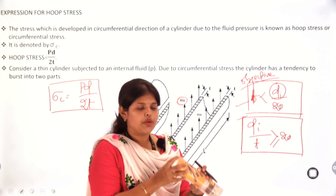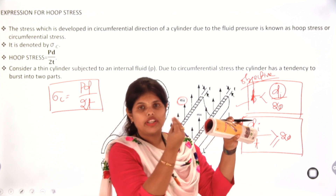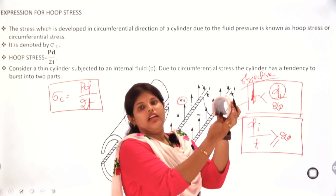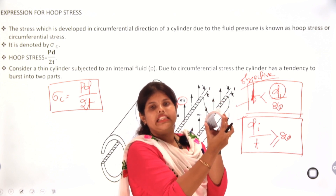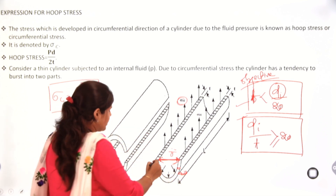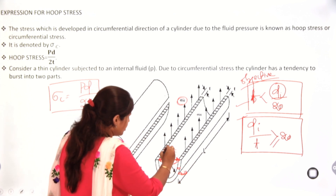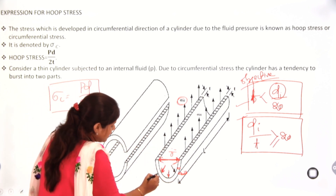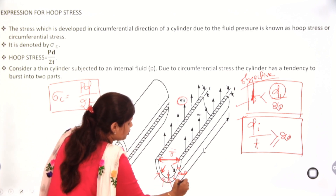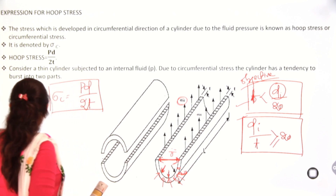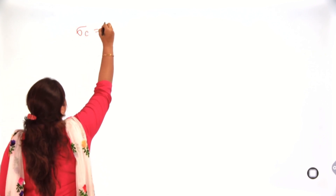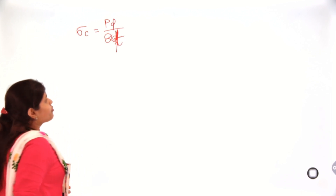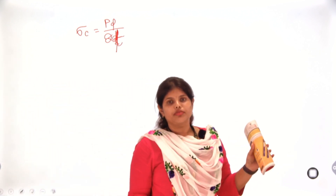The high pressure fluid inside wants to burst in the outward direction. After bursting, the cylinder would form into two separate parts. The inside pressure acts outward, and to resist this bursting force, there is a resistance force from the metal. As we know from Newton's third law, every action has an equal and opposite reaction. So if the bursting force is, say, 100, the resistance force will also be 100.